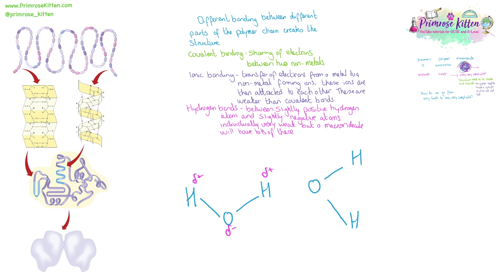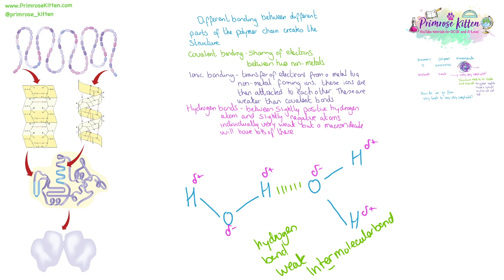Hydrogen is going to be slightly positive, and here we have oxygen as slightly negative. This is polar — there is polarity shown. And between the positive and the negative, there is going to be a slight attraction, and this is hydrogen bonds. This on its own is very, very weak. It is an intermolecular bond. The lines drawn here in blue are covalent bonds — these are strong covalent bonds, and this is an intramolecular bond.